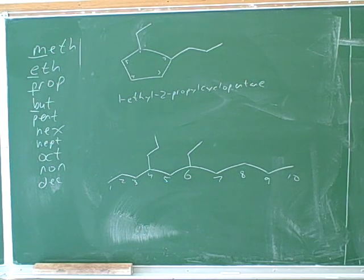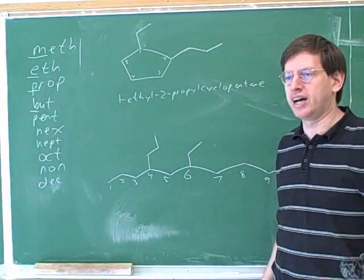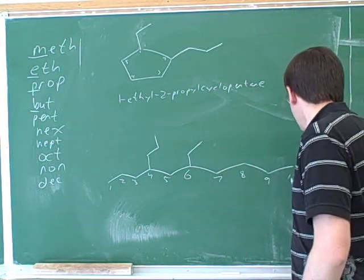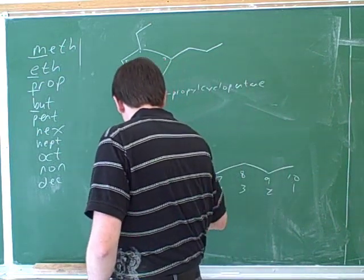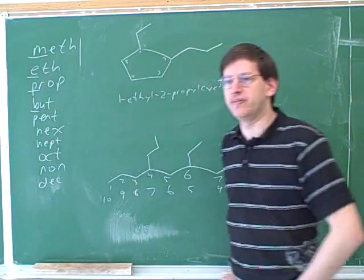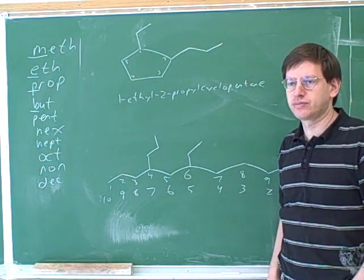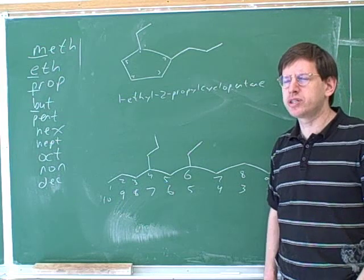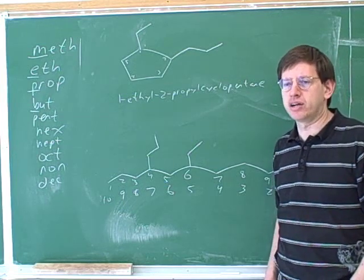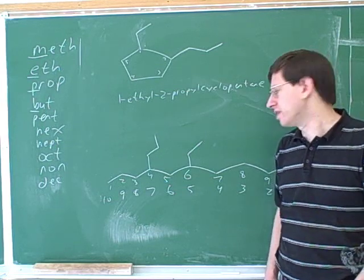So we haven't talked before about having multiple substituents on the straight chain. We could do the numbering in either direction. What's the smallest locator we would have if we start the numbering on the left? The smallest locator we would have if we start the numbering on the left would be four.